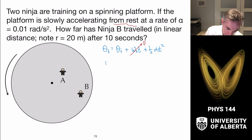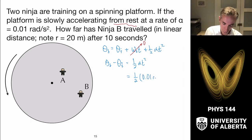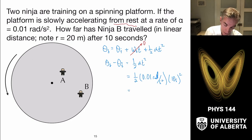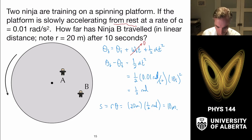The equation is theta final equals theta initial plus omega naught times t plus one half alpha t squared. Since we start from rest, omega naught goes to zero, and the angular displacement is one half alpha t squared. Plugging in: one half times 0.01 rad per second squared times 10 seconds squared gives half a radian. Then using s equals r theta, with r equals 20 meters: 20 meters times half a radian equals 10 meters traveled.